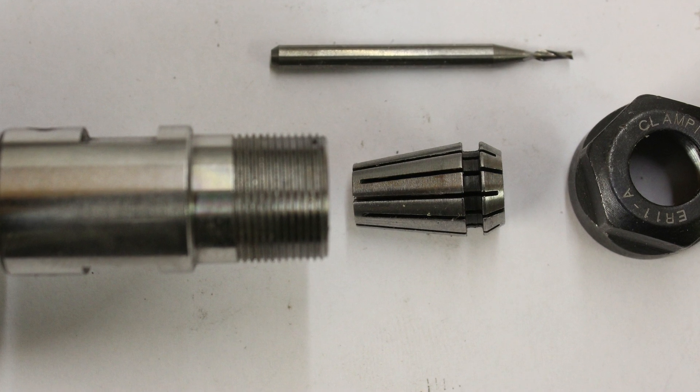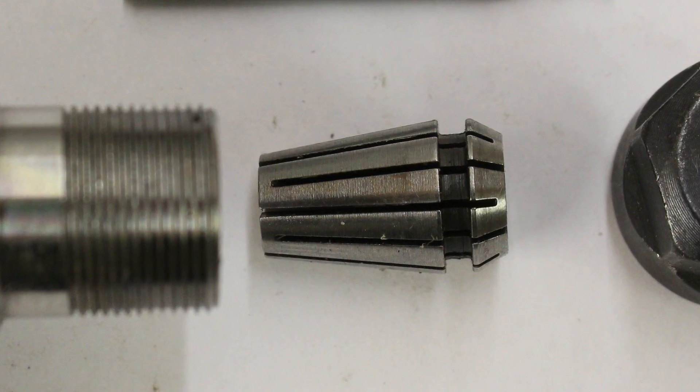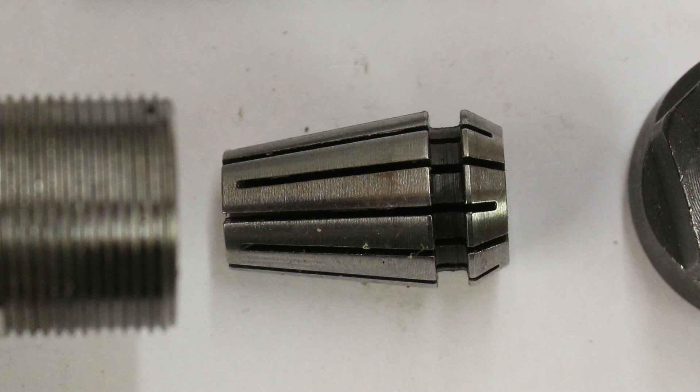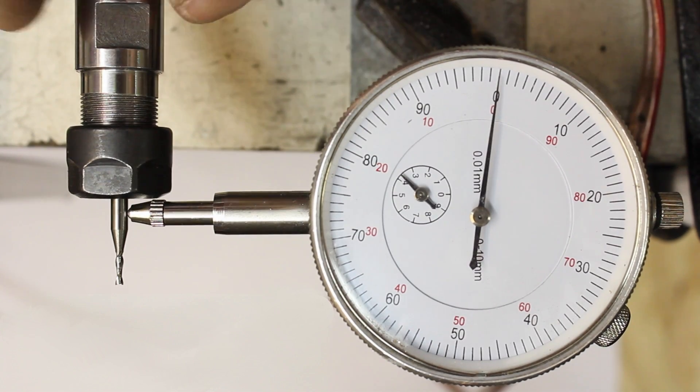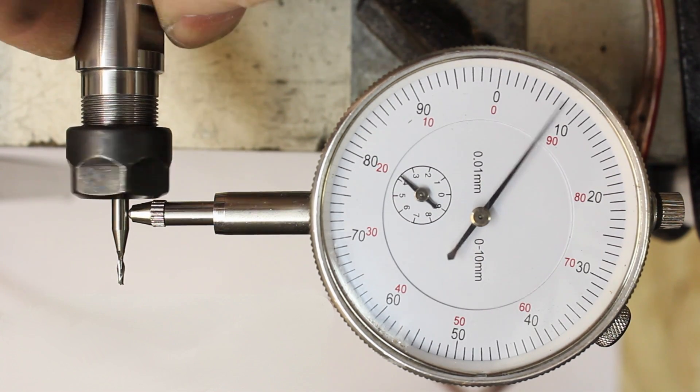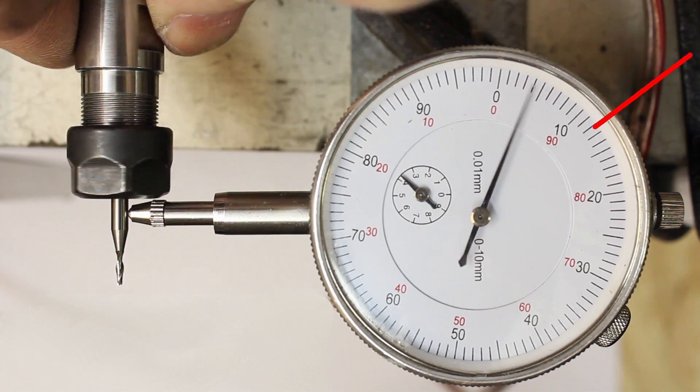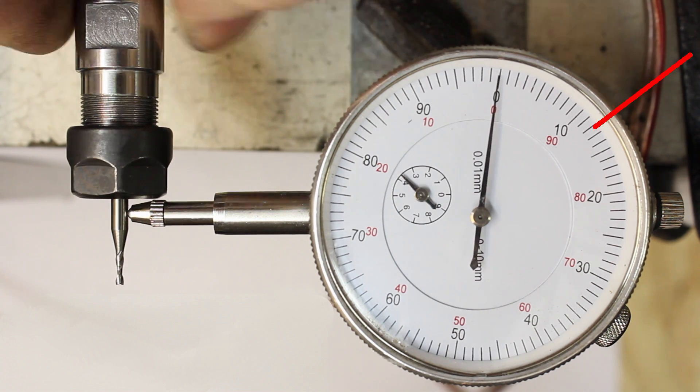The 3.175mm collet of the 400W motor is made of steel. We get an error of 120 micrometers.